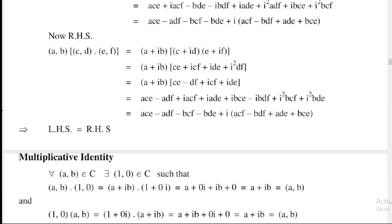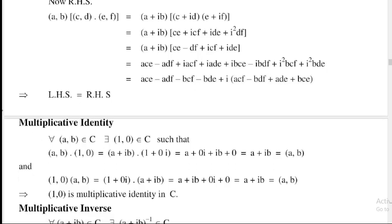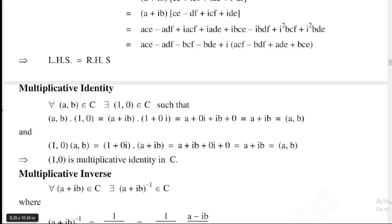Next: Multiplicative identity. For all (a,b) belonging to C, there exists (1, 0) in C such that (a,b)·(1,0) equals (a + ib)(1 + 0·i) = a + ib = (a,b). Also (1,0)·(a,b) = (1 + 0·i)(a + ib) = a + ib = (a,b). Therefore (1, 0) is the multiplicative identity in C.